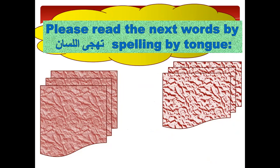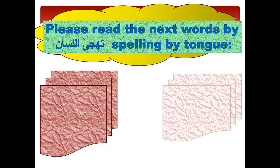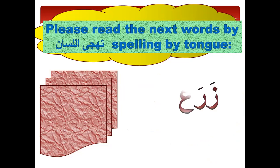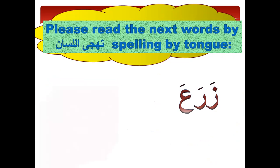Please read the next word by spelling by tongue — Tahajji Lisan. The first word. Can you read this word? Please repeat after me. Zay fatha — Za. Ra fatha — Ra. Ayn — Zara'a. Please repeat after me. Alif fatha — A.